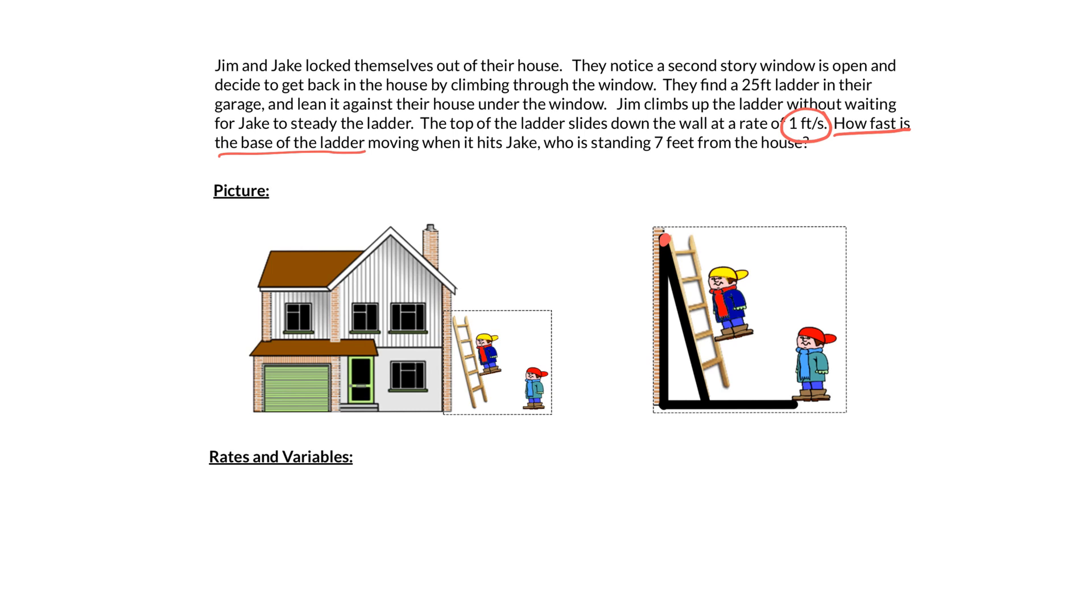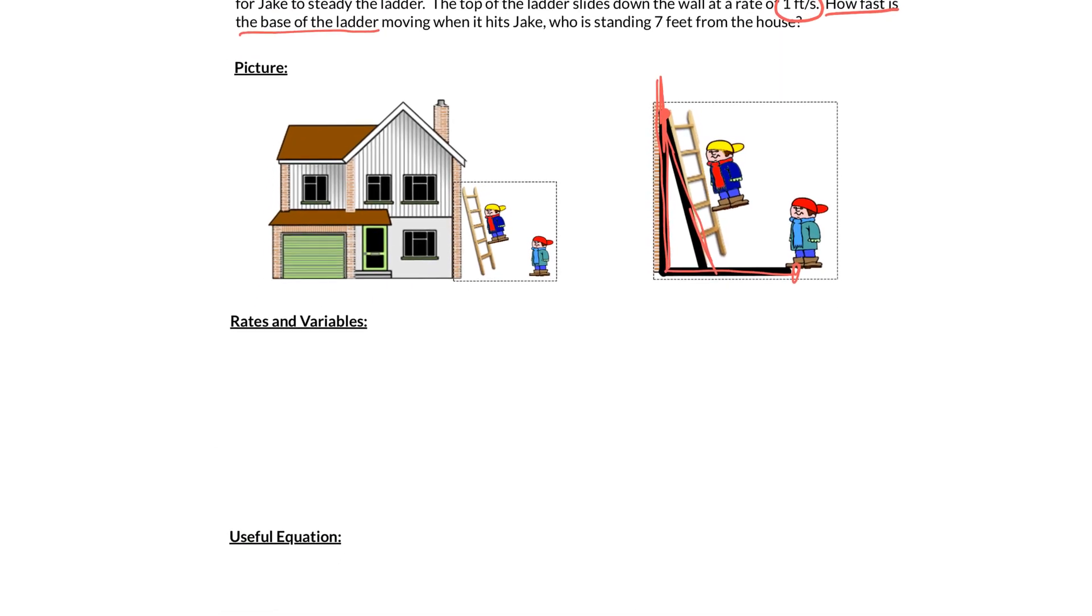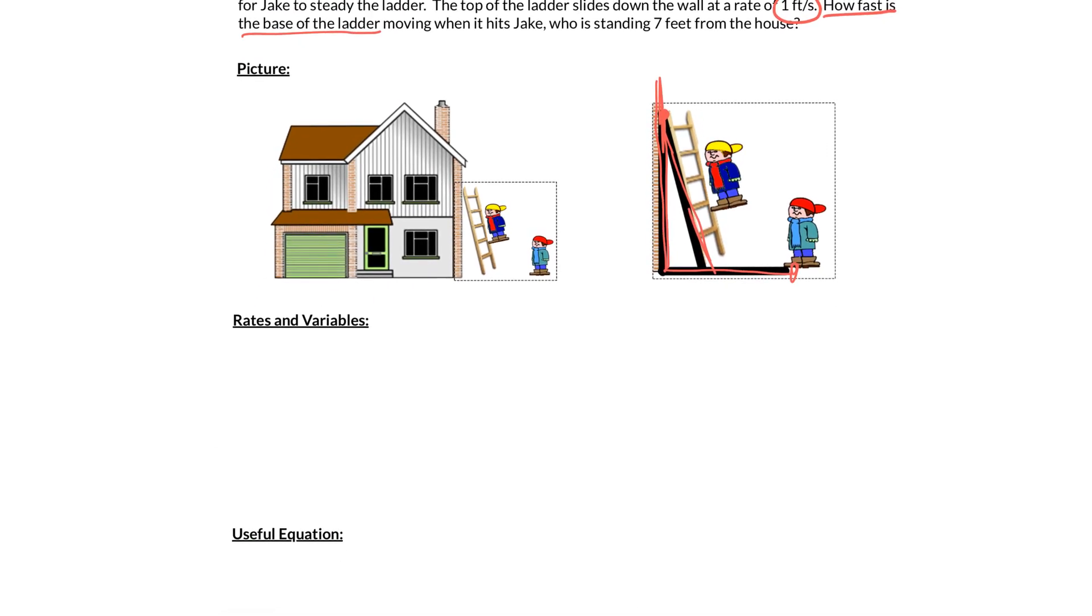If we zoom in here, let's take this small dotted box and make it bigger. What we need is we need the wall of the house, we need the ground, the ladder, and we probably need to know where Jake is standing. So come down here and this is what I would draw on my paper: the wall, the ground, the ladder, and Jake.